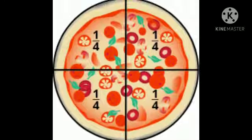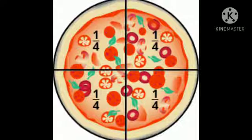And suppose if I have invited three of my friends, then I will cut this pizza into four equal parts. Each part is called one fourth. It is denoted by one upon four. Here, one upon four means one part out of four equal parts.